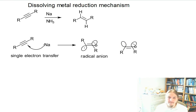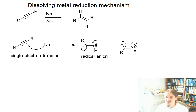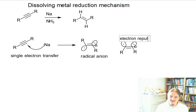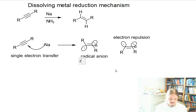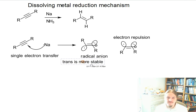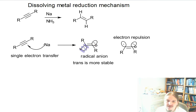Like other things that happen to alkynes, this radical anion can form with either trans or cis stereochemistry. If it forms with cis stereochemistry, the anion and the radical are facing the same direction and are going to repel each other — electrons repel each other. So in fact, the trans radical anion is more stable, because the lone pair and the radical would repel each other if they were near each other.